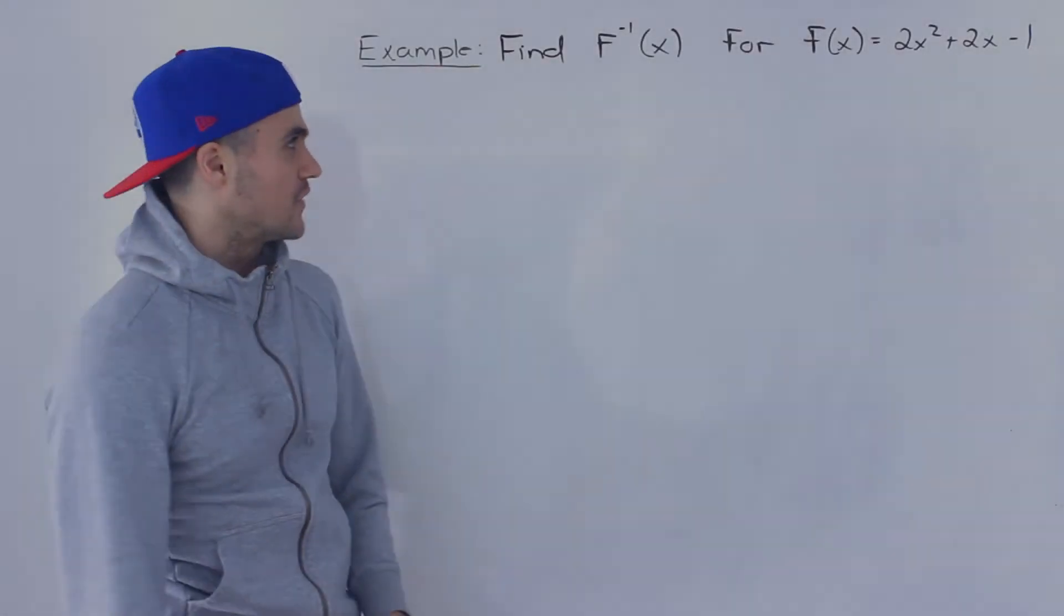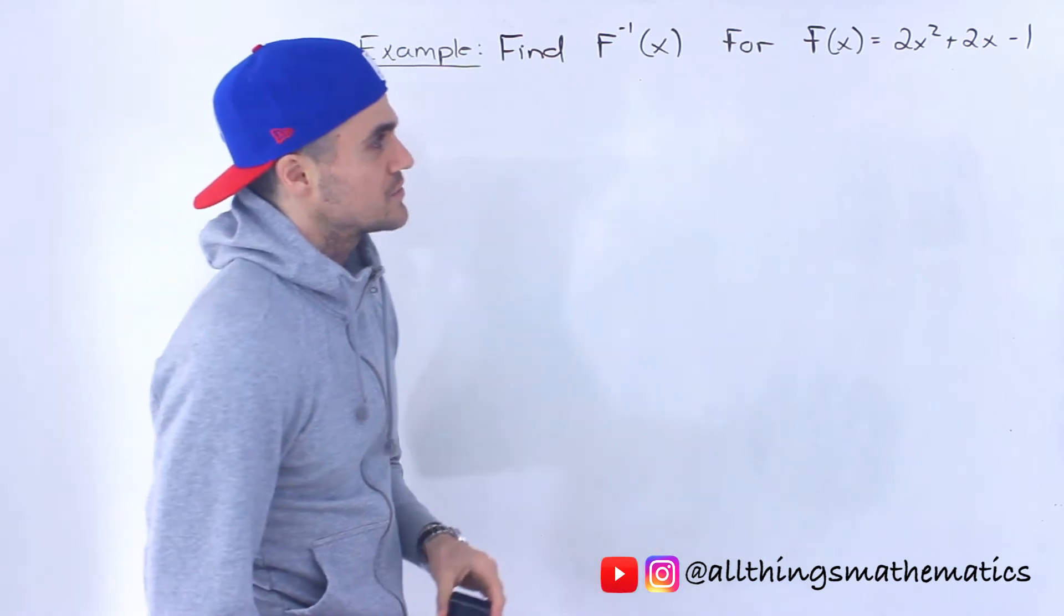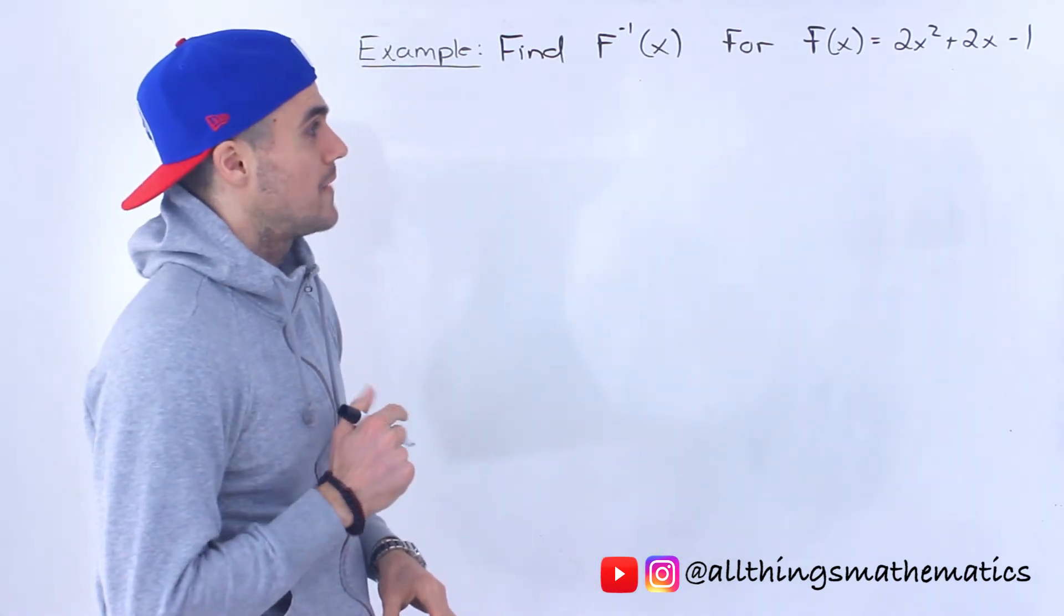What's up, everyone? Welcome back. Patrick here. Moving on to the next question, we've got to find the inverse for this function, f of x equals 2x squared plus 2x minus 1.